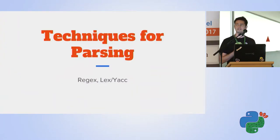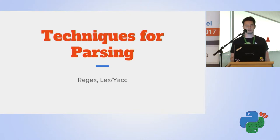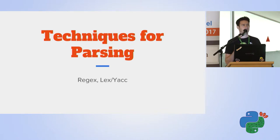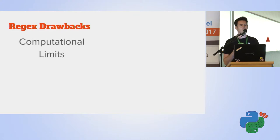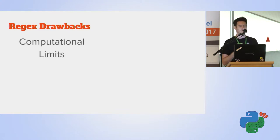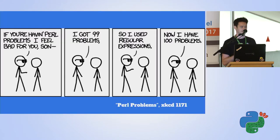Text parsing is not a new kind of problem, and there are some well-known approaches for trying to solve it. One of them, the most familiar one, is regular expressions, or regex for short. But regular expressions have two major drawbacks. The first is that they have computational limits on what you can actually parse. The second, which anyone who uses regular expressions knows, is that they're difficult to read - they get ugly really, really fast.